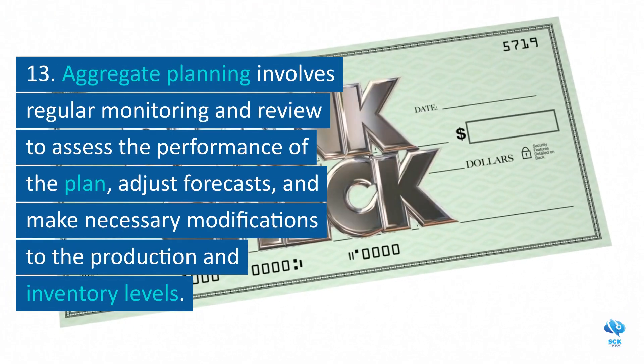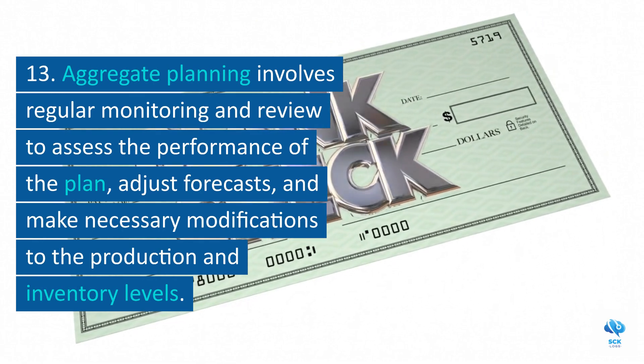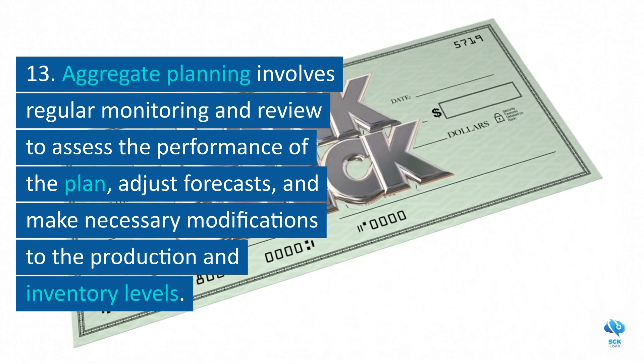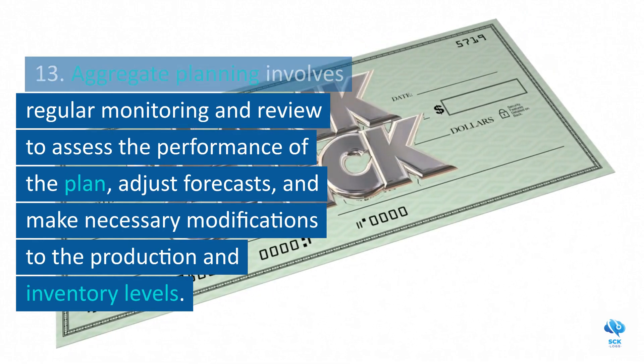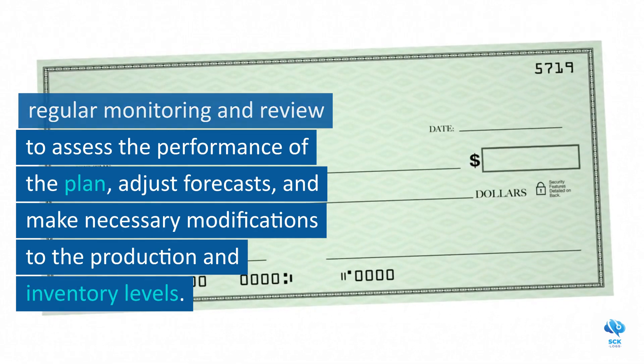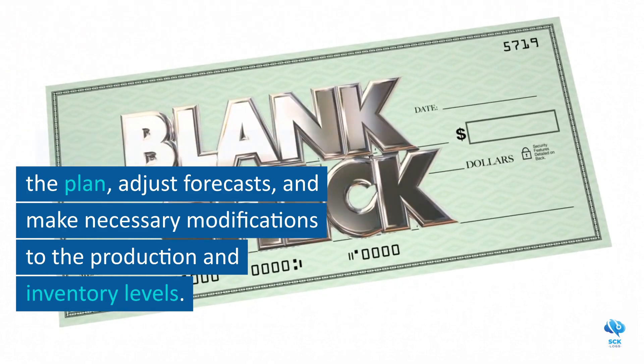Aggregate planning involves regular monitoring and review to assess the performance of the plan, adjust forecasts, and make necessary modifications to the production and inventory levels.